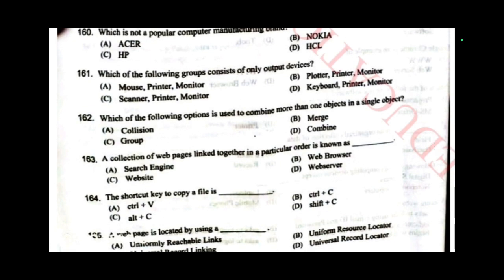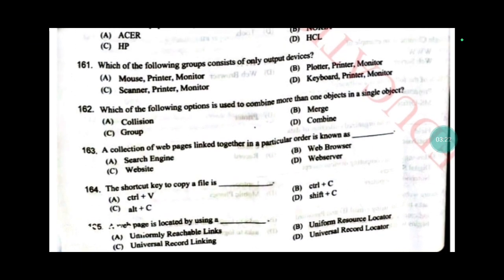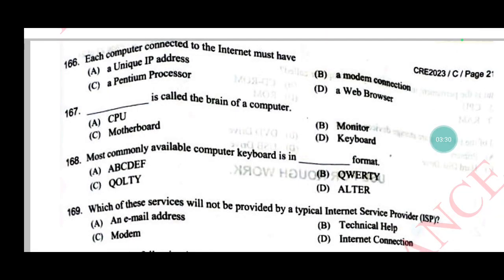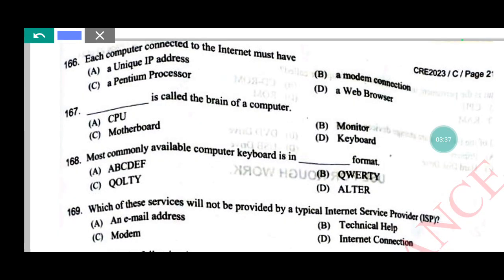The shortcut key to copy a file is — answer B: Ctrl+C. The web page is located by using — answer B: Uniform Resource Locator (URL). Each computer connected to the internet must have a unique IP address, answer A. What is called the brain of the computer? Answer: CPU.